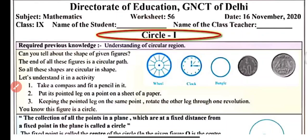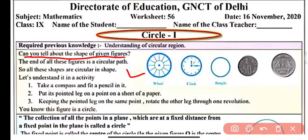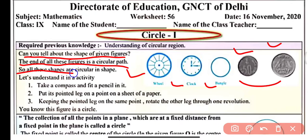Can you tell me about the shape of the given figures? We are given a wheel, clock, bangle, and two coins — one of 50 paisa and another of 1 rupee. The outline of all these figures is a circular path, so all these shapes are circular in shape. Let's understand this with an activity.